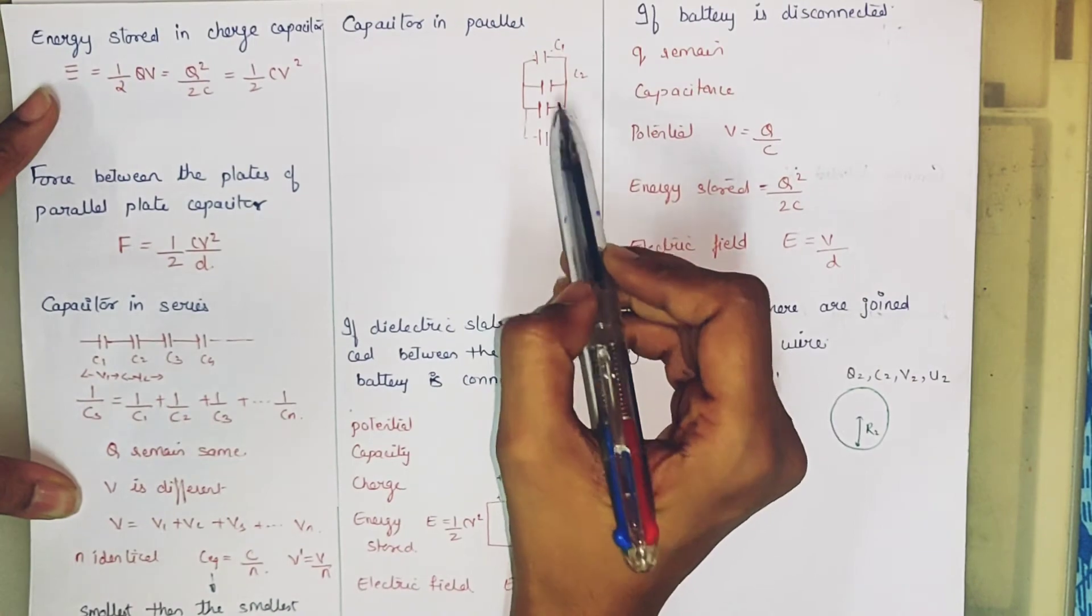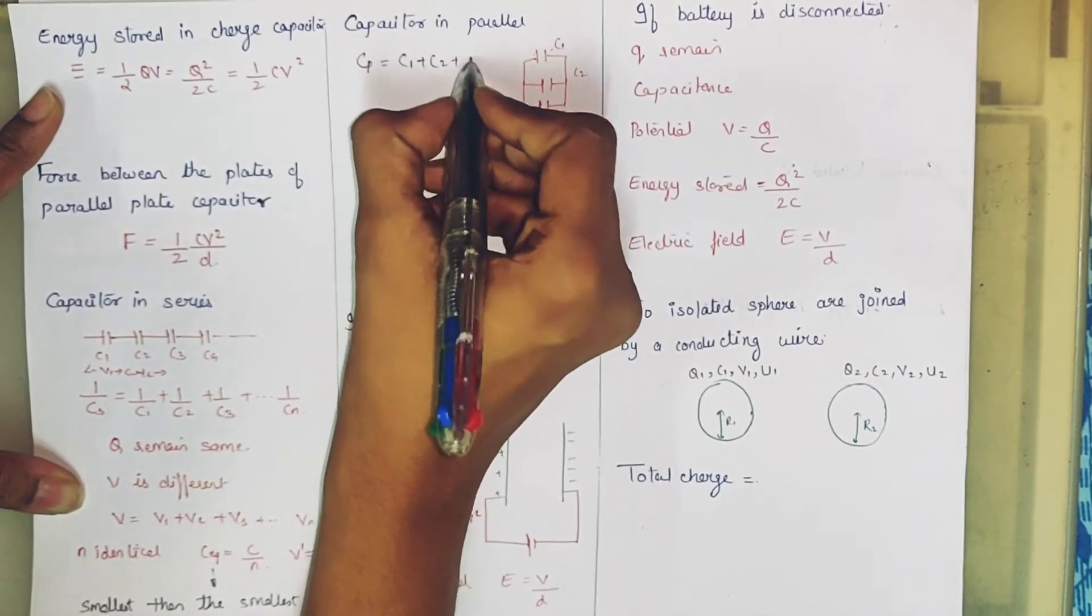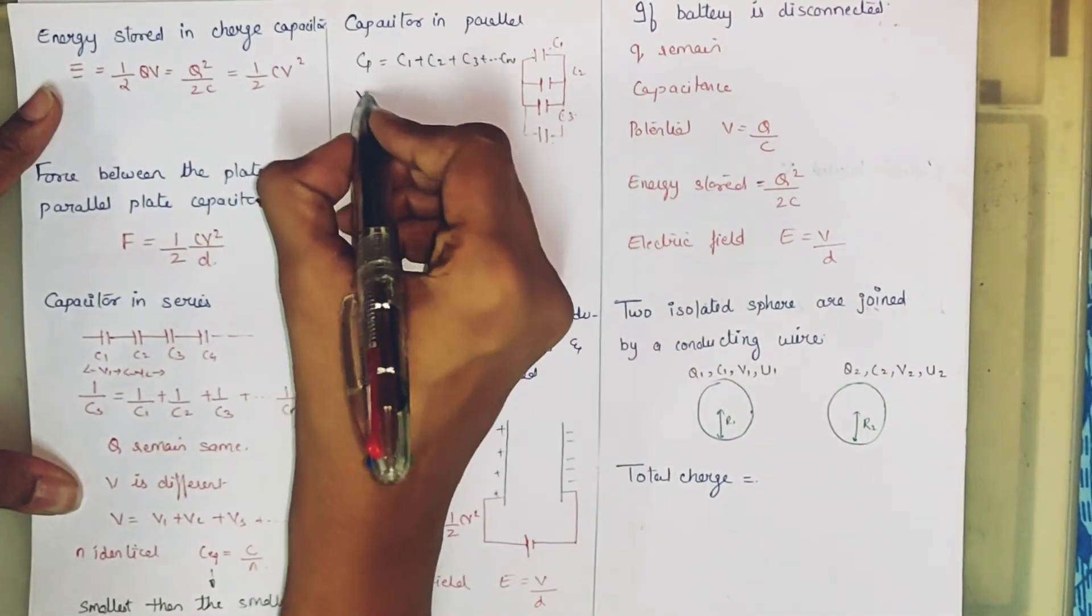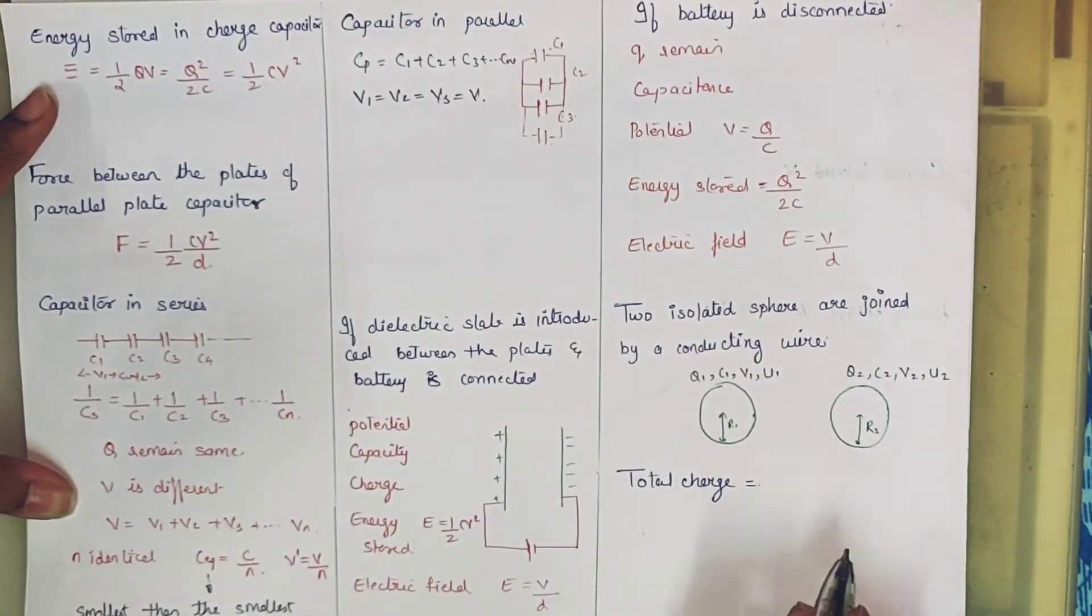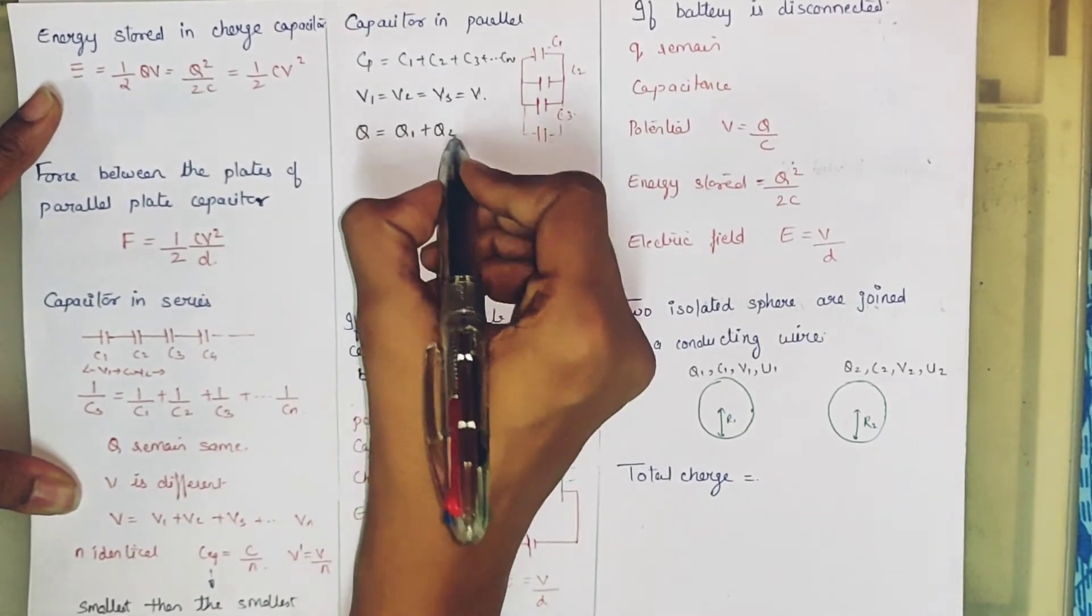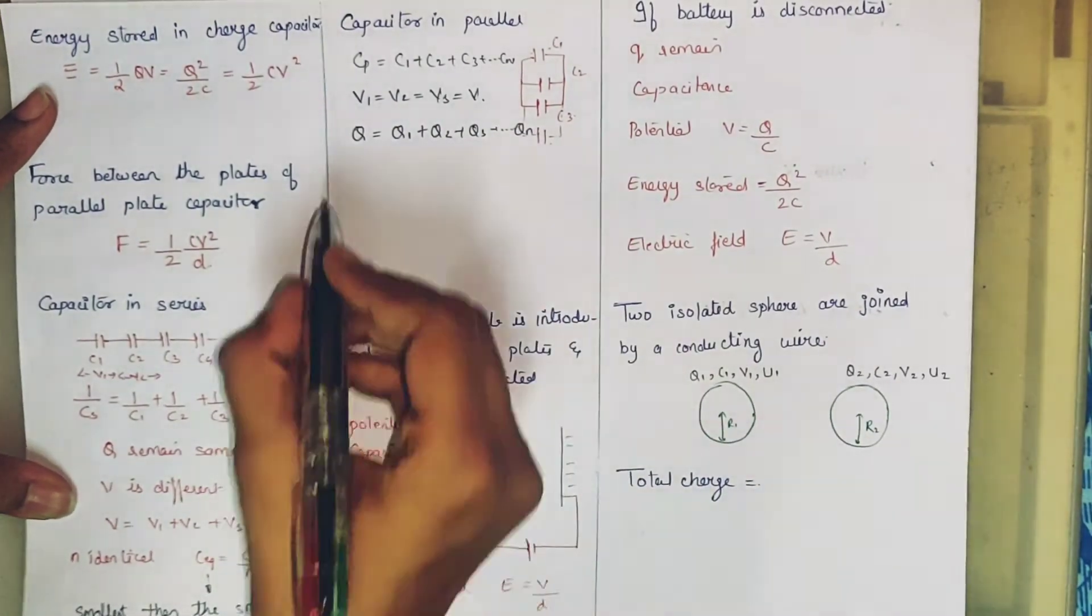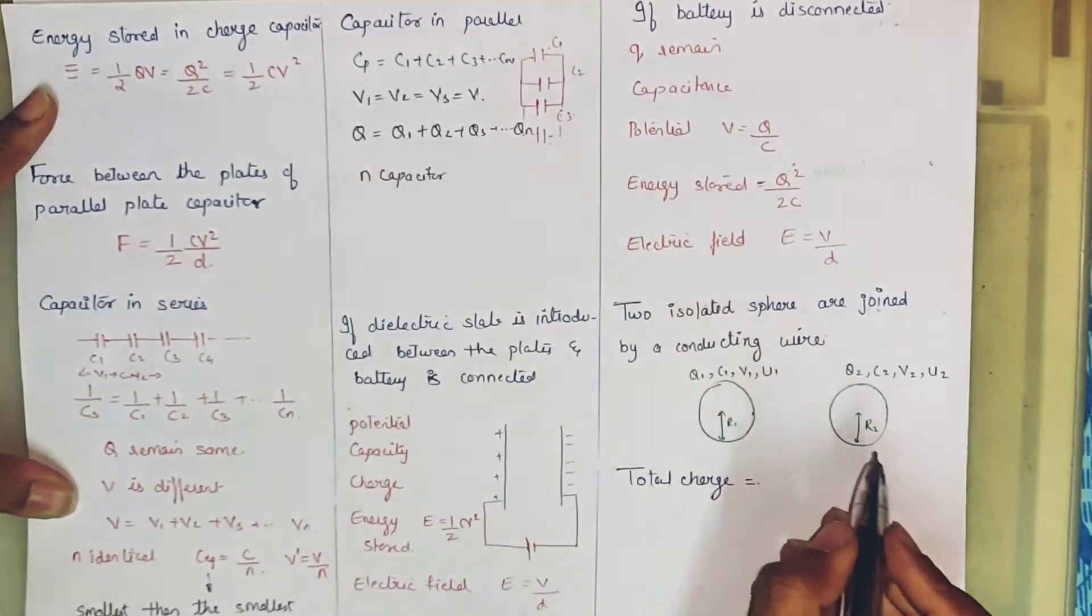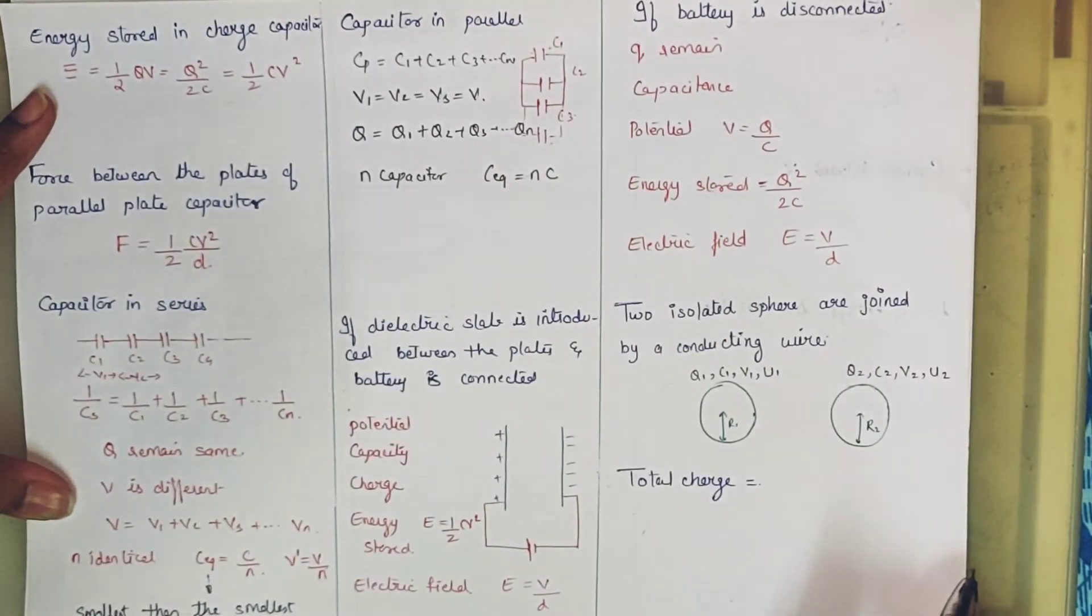Next, we will put the capacitors in parallel. Here the series will come. CP is C1 plus C2 plus C3 plus dot dot dot Cn. What will be the same here? Here the cross potential will be the same. V1 will be equal to V2 will be equal to V3 will be equal to V. And where the current branch will be different, the charge will be different. So next charge will be Q1 plus Q2 plus Q3 plus dot dot dot Qn. Suppose we have N capacitance, all the same. If we have put N capacitance all the same, the C equivalent will be N into C.